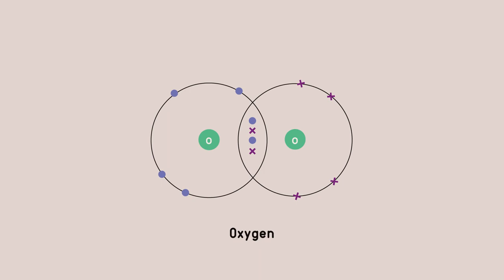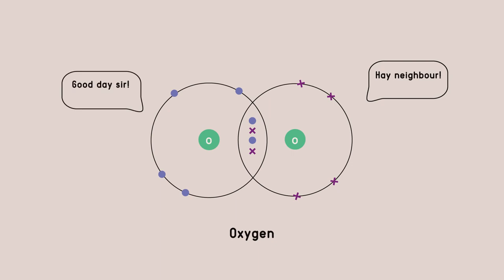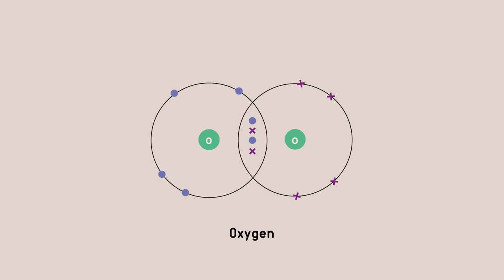Dots and crosses don't distinguish between different kinds of atoms, just neighbours. It doesn't matter which atom has the dots and which atom has the crosses, as long as bonds form between one atom with each.